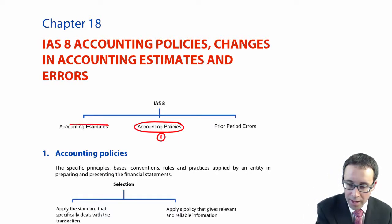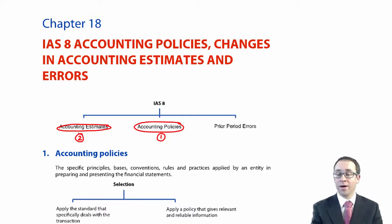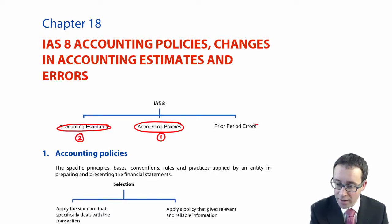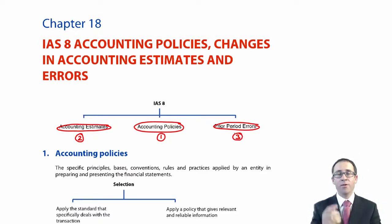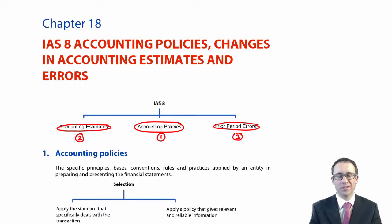We also look at your accounting estimate — what constitutes an accounting estimate. Then we combine the first policy and the second estimate with what happens if we change the policy or if we change the estimates. Third and finally, we look at what happens if you have made an error within the financial statements — how do we subsequently correct that accounting error where numbers have been incorrectly reported in previous accounting periods?